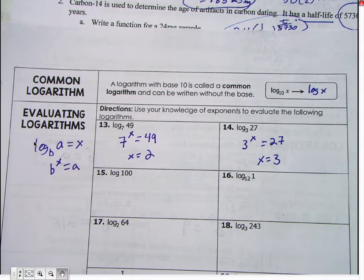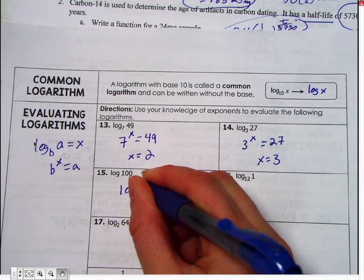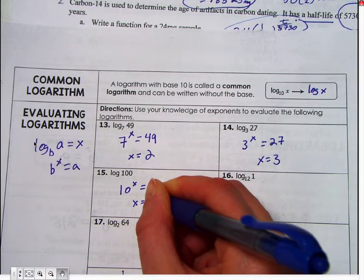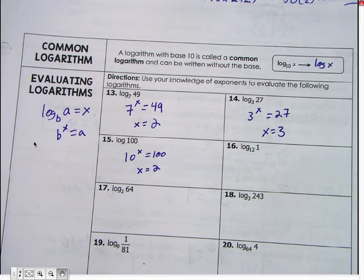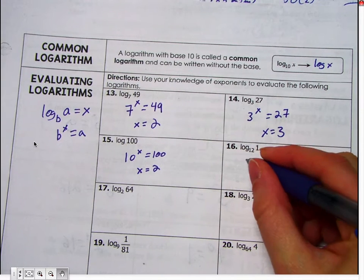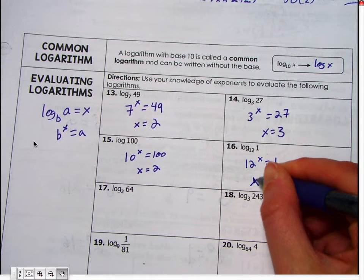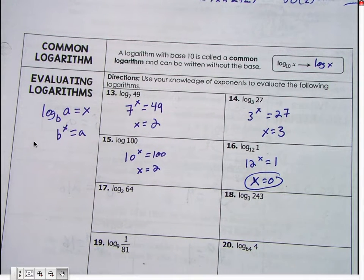Okay. Now here's a trick one for fifteen. What is it going to be? Ten. What? Ten to the x equals 100. And so what does x have to equal? Two. Anything to the zero power equals zero.